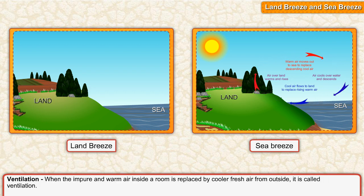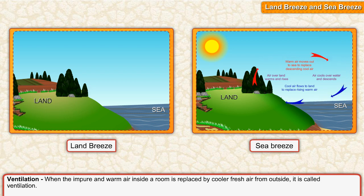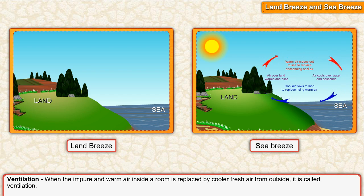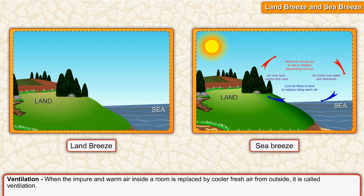At night, the land cools down faster than the seawater. The air above the seawater is warmer than the air above the land. The warm air rises up and the cool air from the land rushes towards the sea. So, the wind blows from the land to the sea. This is called land breeze.